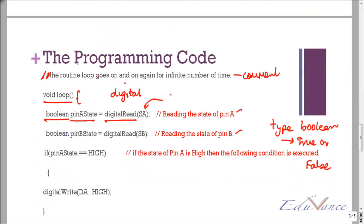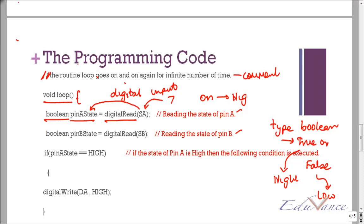SA was pin number seven, which is of the type input. So I am reading a digital input from pin seven, and depending on whether it is true (high) or false (low), that value goes into the variable pinAState. If pin seven — the switch — is on, pinAState becomes high. Similarly, I do the same for pinBState: SB was pin number eight, so if the switch on pin eight is off, I get a low signal stored in pinBState.